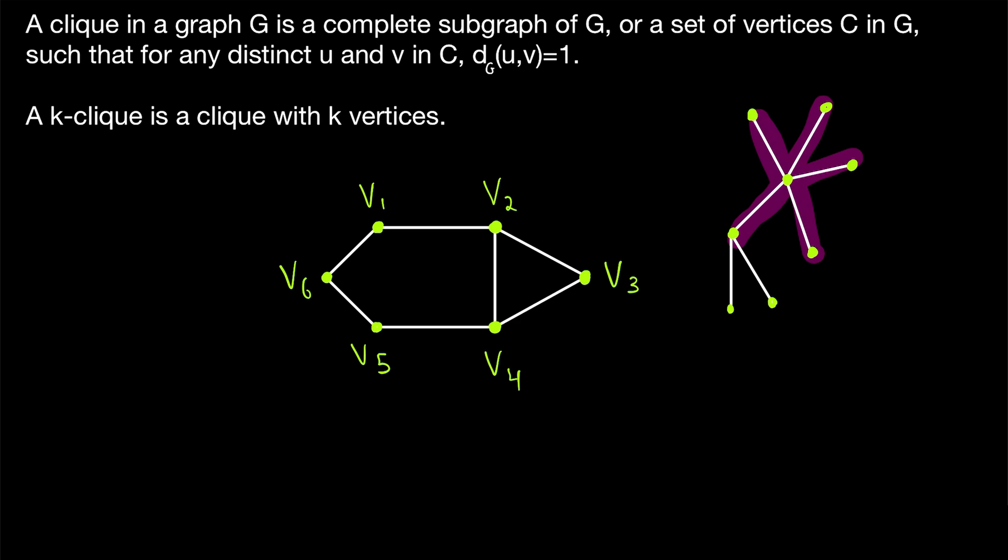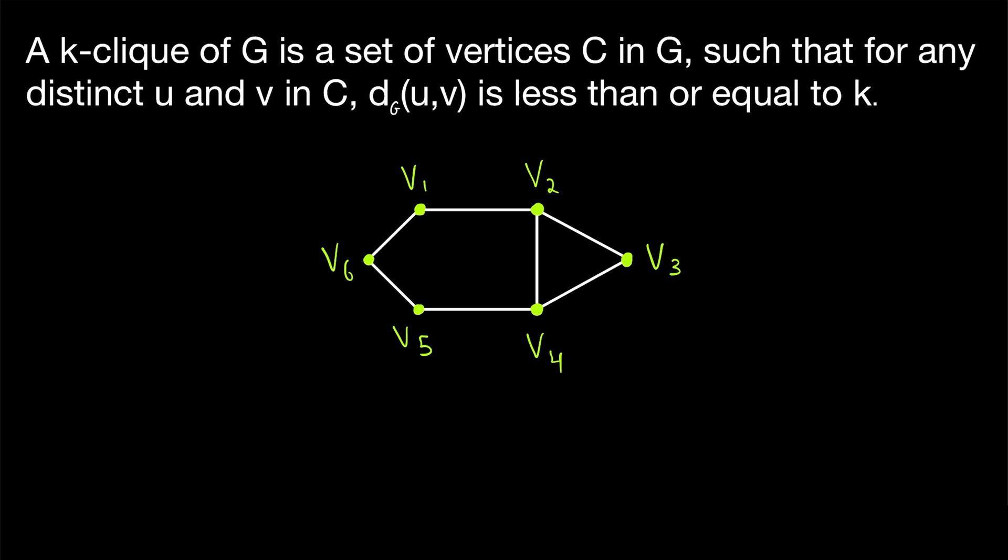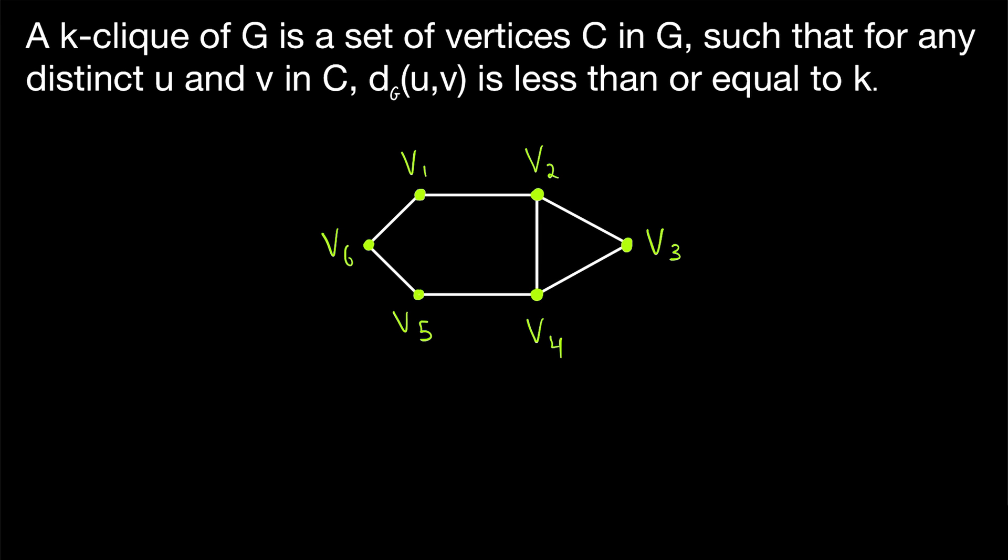So what we can do to kind of solve the problem is to weaken the restriction of clicks to consider substructures that aren't quite so strict in their definitions. One way we could weaken the definition of clicks is to increase the permitted distance between two distinct vertices in the click. Remember that in a normal click, the distance between any two distinct vertices has to be one. We can weaken this by increasing the allowed distance. And this leads us to our definition of k-click. For this definition, we say that a k-click of a graph G is a set of vertices C in G, such that for any distinct vertices u and v in C, the distance between u and v is less than or equal to k.